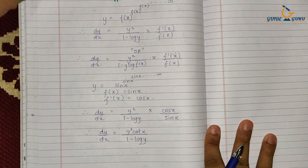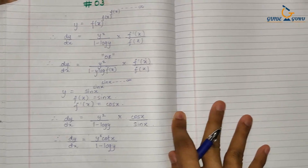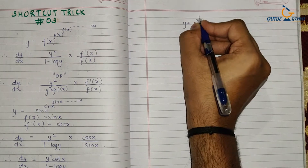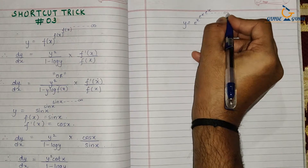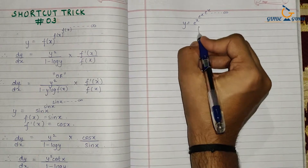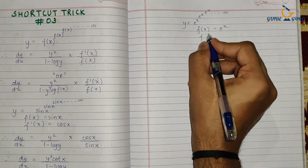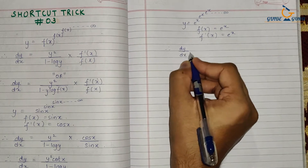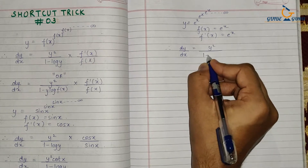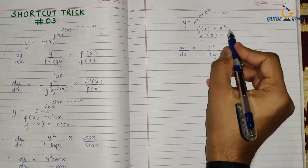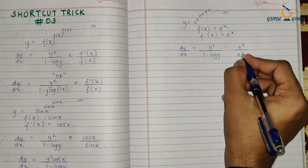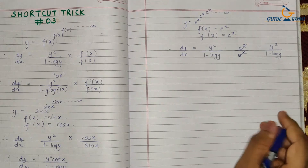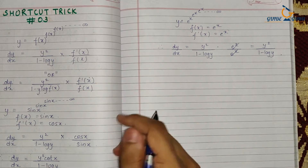Let us calculate the derivative of another example. Consider y = e^x raised to e^x raised to e^x going on till infinity. The function here is e^x, and its derivative is also e^x. So the derivative is y² upon (1 − log y) into e^x / e^x — the e^x terms cancel, leaving dy/dx = y² / (1 − log y).